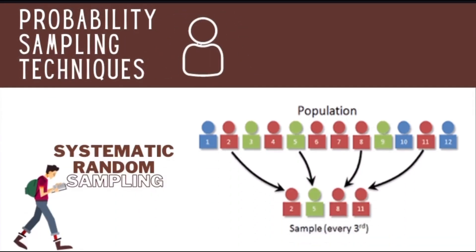In systematic random sampling, you may list down all the names, assign numbers to those people or objects, and then you decide for a starting point and then kukunin yung interval.